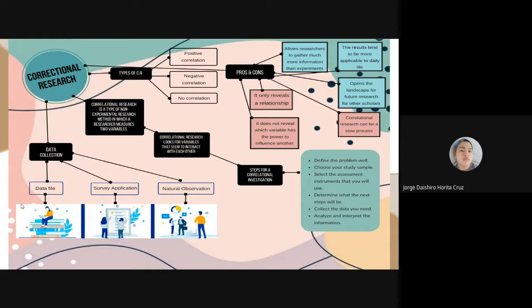There are three types of correlational research. The first is positive correlation. A positive correlation between two variables is when an increase in one variable leads to an increase in another variable, and a decrease in one variable will lead to a decrease in the other variable.